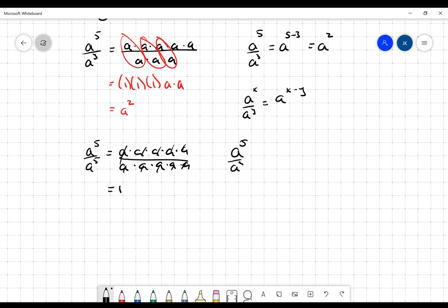If I utilize my subtracting of the exponents there, I get a to the five minus five, which is a to the zero, and I know that that must be equal to one. I know that that's true.